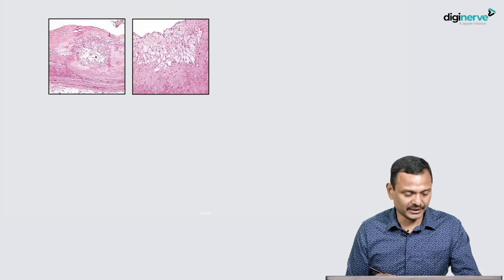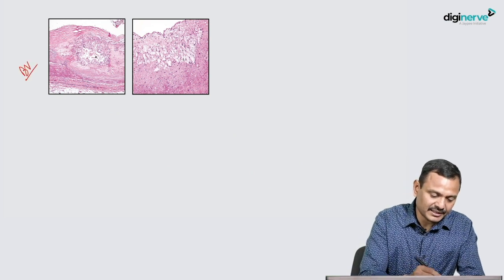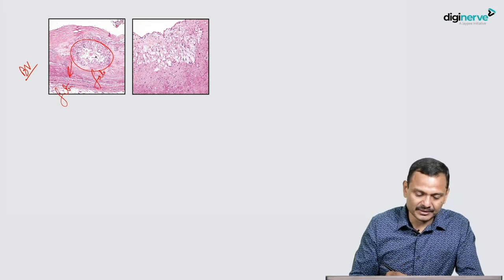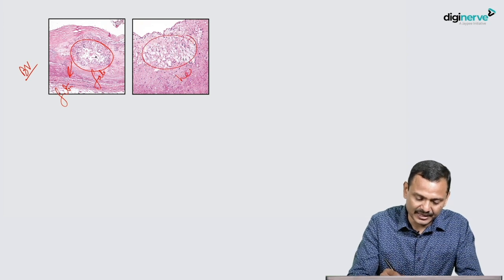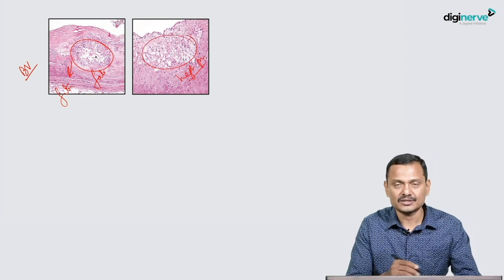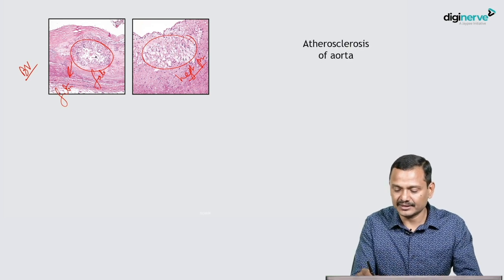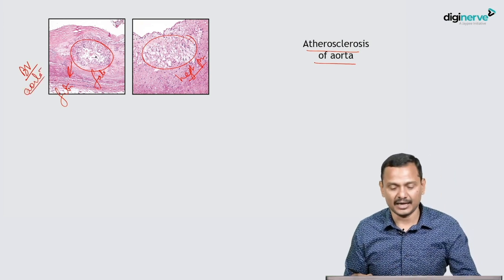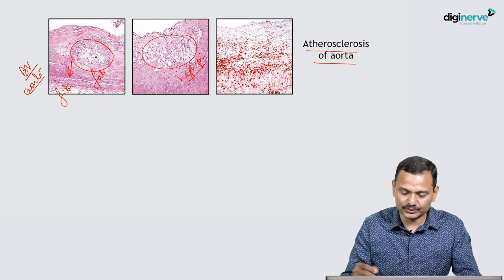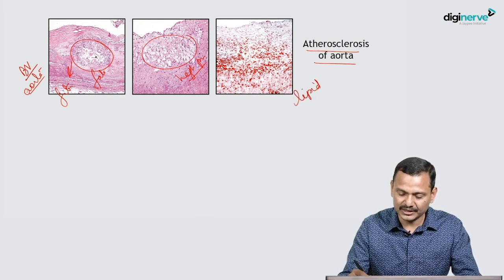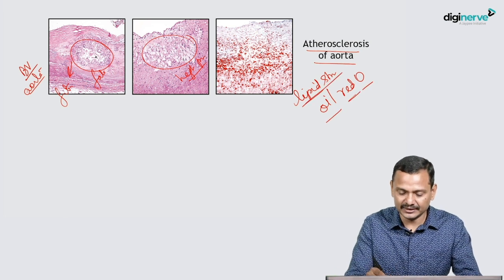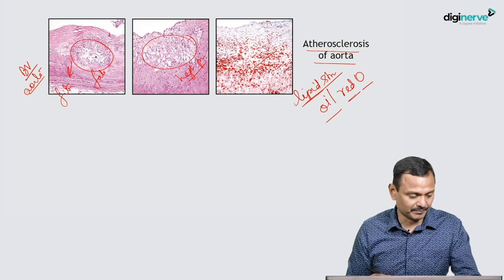Now let's look at some images. In this blood vessel, you can see some fat, some fibrosis or collagenous tissue, and some foamy macrophages — better appreciated in high power. This tells us there is atherosclerosis of the aorta — a section from a larger elastic artery. This fat can be demonstrated with the help of a lipid stain — that is oil red O — which will highlight the fat present in these macrophages.